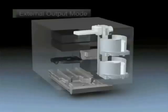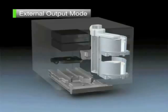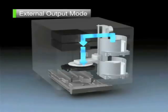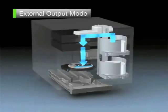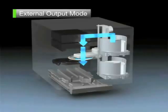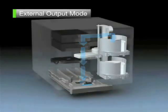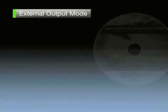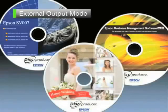Place the discs in stacker one or two. The discs will be transported and data writing will be carried out. After label printing is completed, the discs will be output to stacker four. It is possible to remove the discs by pulling out stacker four without opening the disc cover. External output mode is most appropriately used for production of small numbers of discs.